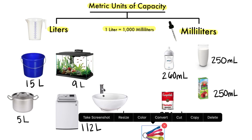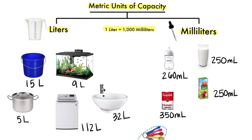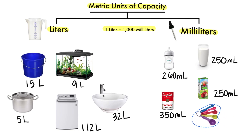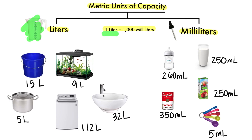What about measuring spoons? Would you use liters or milliliters? Milliliters. One of those measuring spoons can hold 5 milliliters. Now remember this: one liter is equal to 1,000 milliliters.